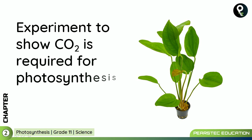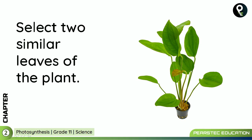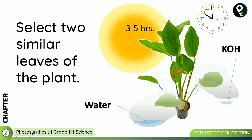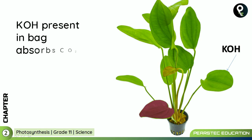Experiment to show that carbon dioxide is required for photosynthesis. Select two similar leaves of the plant. Tie one leaf inside a plastic bag containing water, and tie another similar leaf inside a plastic bag containing potassium hydroxide. After three to five hours, do the starch test for both leaves. The potassium hydroxide leaf showed no color change, but the water leaf showed a color change.